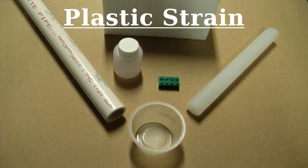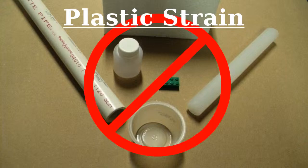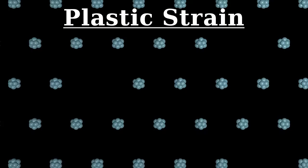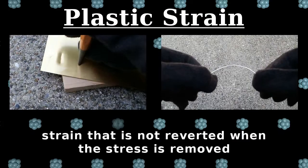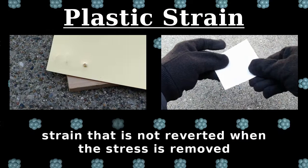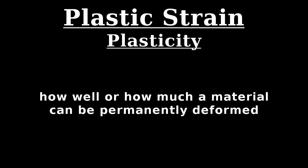The word plastic is often misused to refer to synthetic polymers, but it actually refers to the way that many of them behave. Atoms or molecules shift between different positions in the material, creating strains that do not revert when the stress is removed. Thus a material's plasticity is how well or how much its shape can be permanently changed.